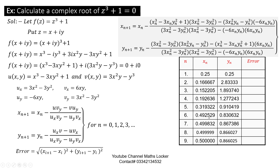Continuing the iterations: 5th, 6th, 7th, 8th, 9th iteration. At the 8th and 9th iteration, check the difference — it is very small, approximately 0.0001, which is within tolerance. The difference between the 8th and 9th iterations is negligibly small, so we can stop. This value is the root.